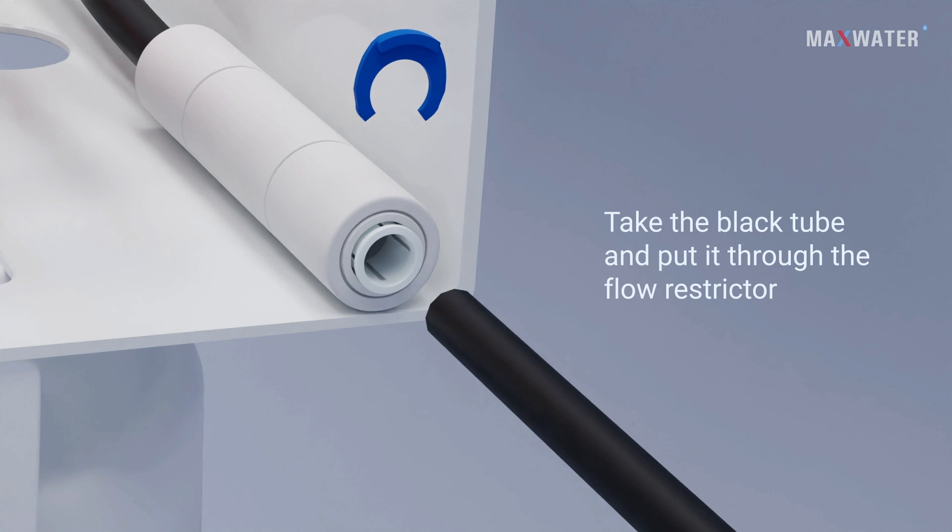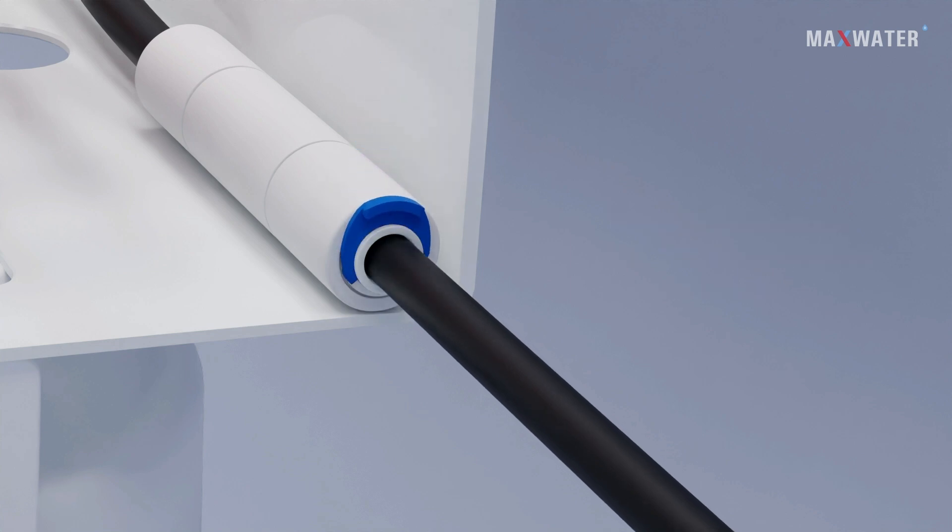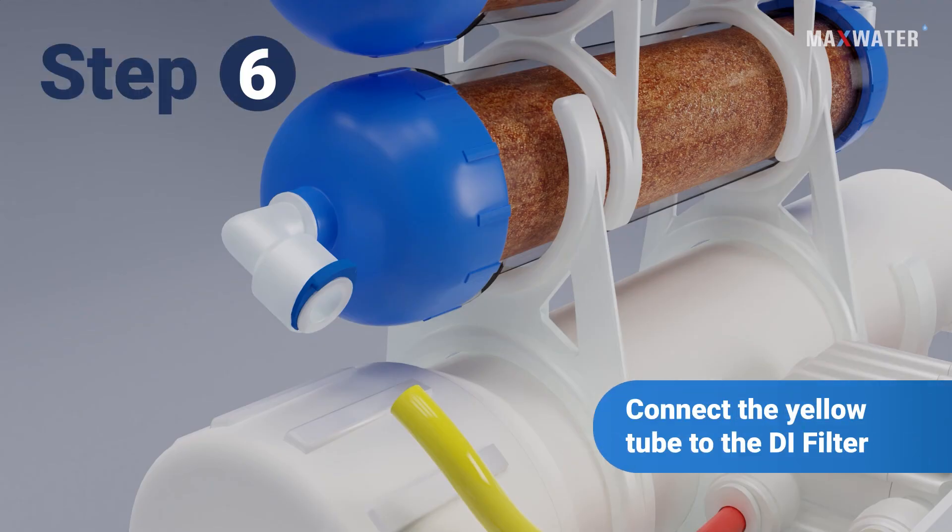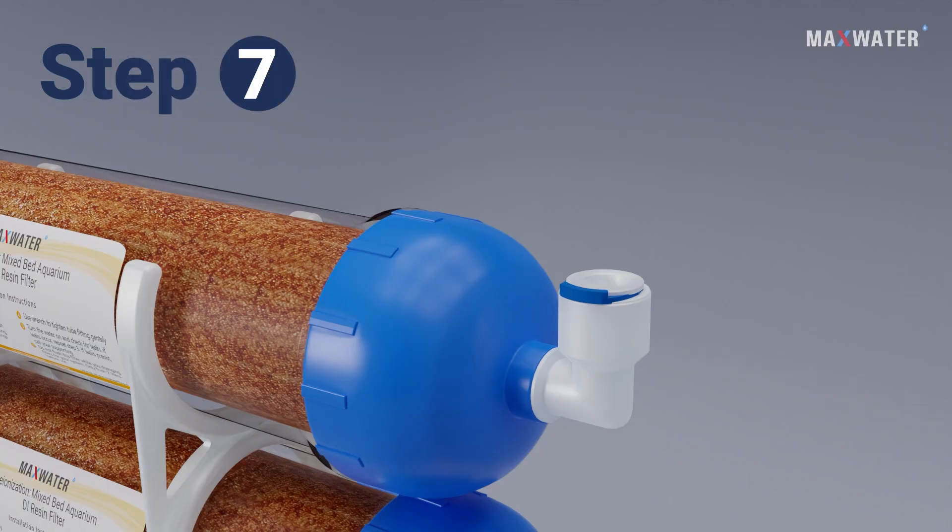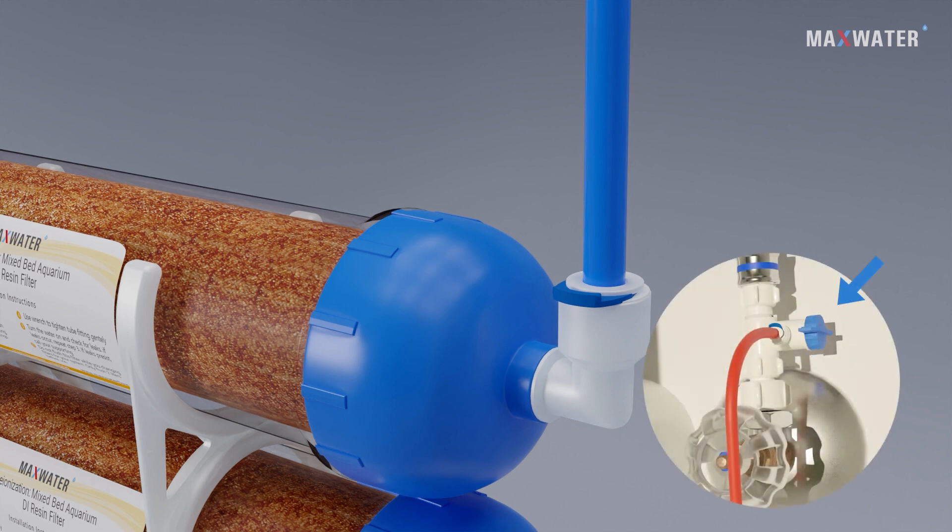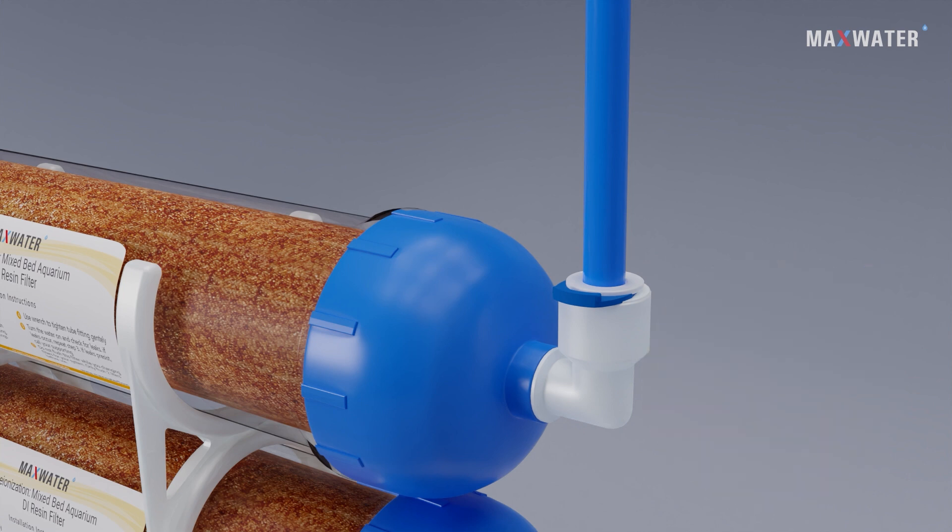Step six: connect the yellow tubing from the auto shut-off valve to the DI filter. Lastly, connect your blue tube to your last filter, in this case it's the second DI filter. Now we can turn the feed water valve on and begin to feed your tank with water your fish friends will love.